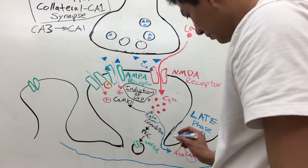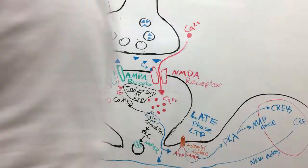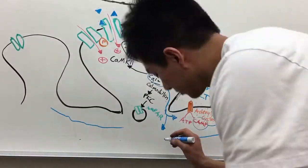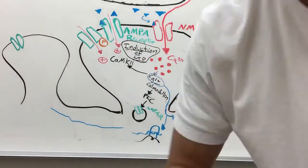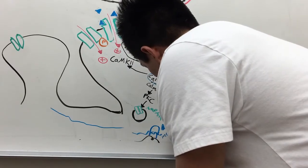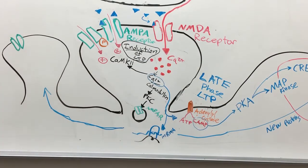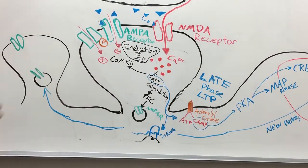These proteins go and travel up into the rest of the neuron. Here we're looking at spines, and we're getting more proteins into different spines of the neuron.